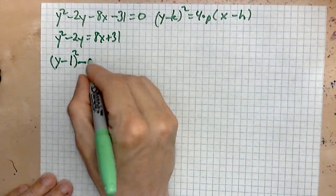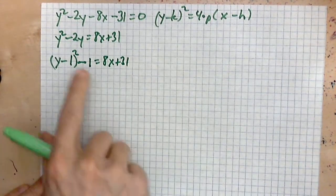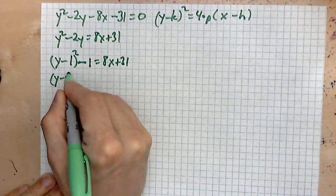Take the negative one and move it to the right side, so you have (y - 1) squared equals